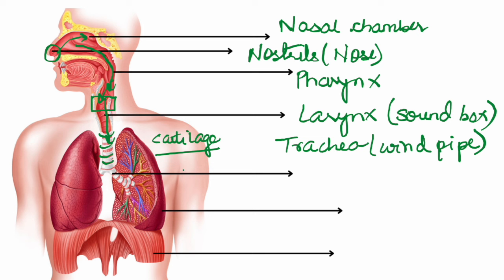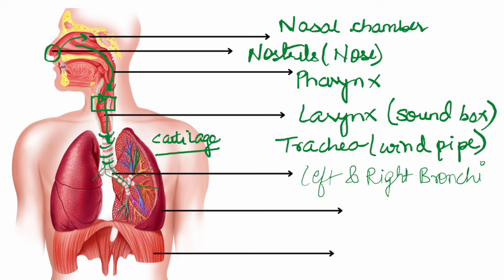These cartilage rings provide support. After the trachea, the air divides into left and right parts — we call these the left and right bronchi. This is where the air practically enters the lungs. These left and right bronchi divide into branches: primary, secondary, and tertiary bronchi. The tertiary bronchi eventually lead to bag-like structures known as alveoli. The alveoli is actually where respiration is going to happen.